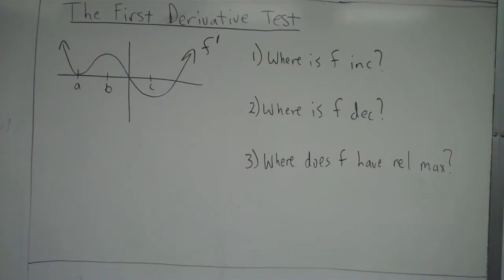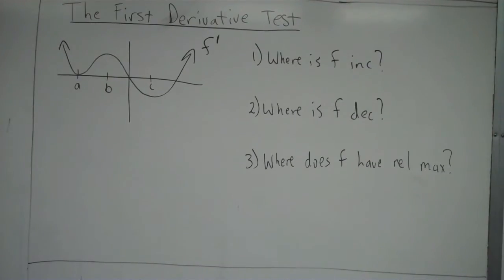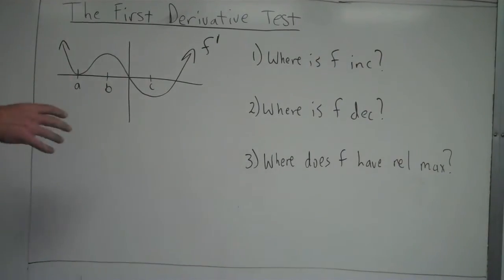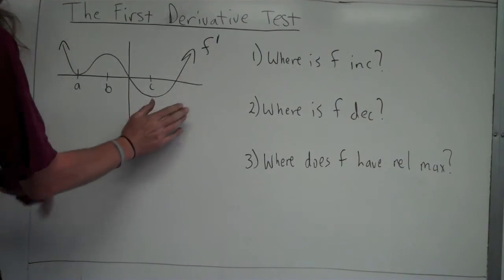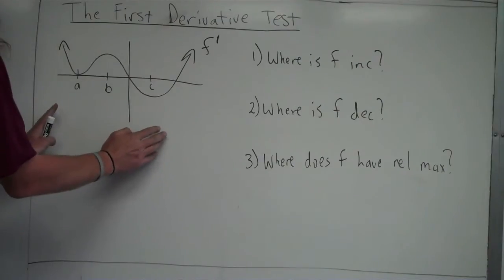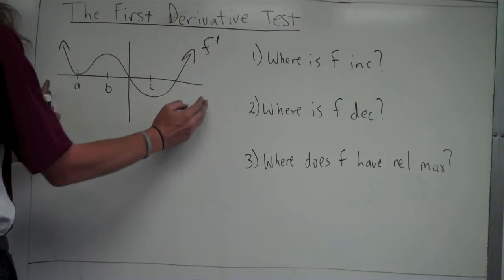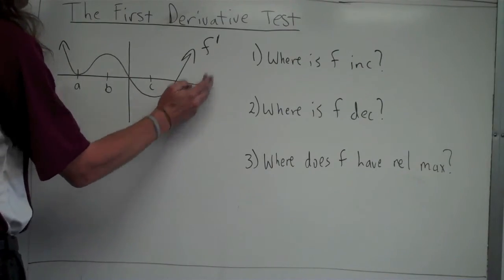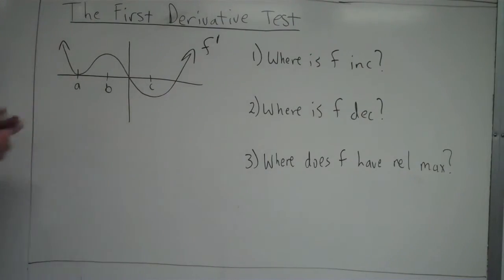Let's take a look at another type of problem using the first derivative test. In the prior couple examples, we've had an actual function that we've taken the derivative of and set it equal to zero to come up with a sign chart. Here's another example you have to be able to deal with, where you are given a graph of f prime and asked certain questions about that.